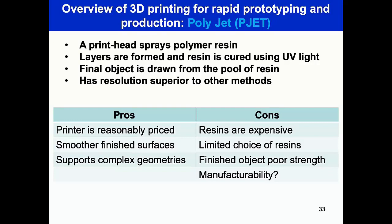Polyjet (PJET): a print head sprays polymer resin, layers are formed and cured using UV light, and the final object is drawn from the pool of resin. Resolution is superior to other methods. Pros: reasonably priced printer, smoother finished surface, and supports complex geometries. Cons: resins are expensive and the choice of resin is currently limited, and the finished object has poor strength. Manufacturability is still not at the scale you would expect.